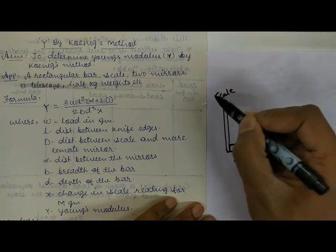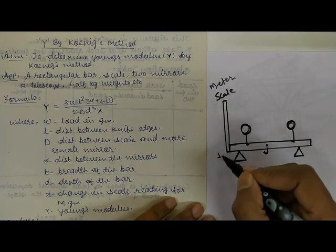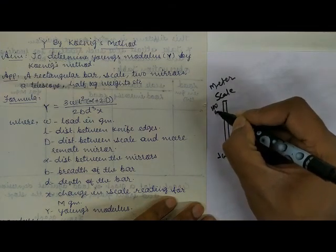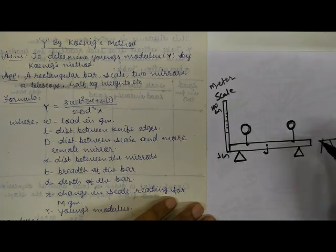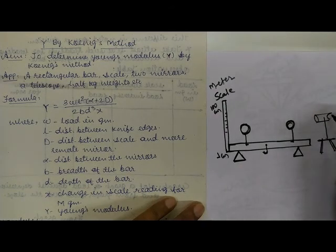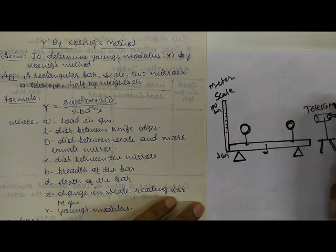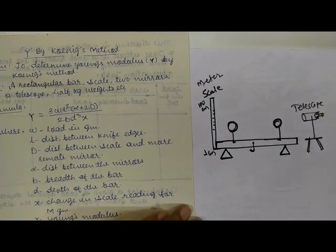This vertical scale — our normal meter scale — has readings from one centimeter to 100 centimeters. To one side we will keep a stool-like structure on which we mount a telescope. Do not worry, I will explain why these arrangements are needed.